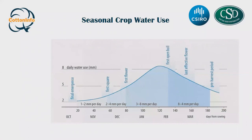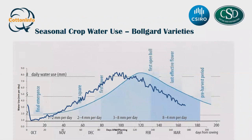Looking at seasonal crop water use: when we hit peak flowering, that is the maximum rate of water use. The very dark blue line shows water use in a BollGard scenario - water use is much higher earlier because the fruit load is much higher on these crops, so demand for water is much earlier than with conventional cotton. When we reach peak flower, we're up to using nearly 10 millimetres of water per day.